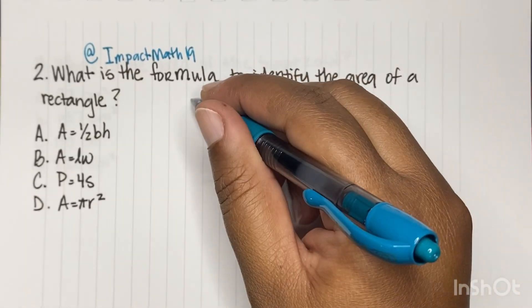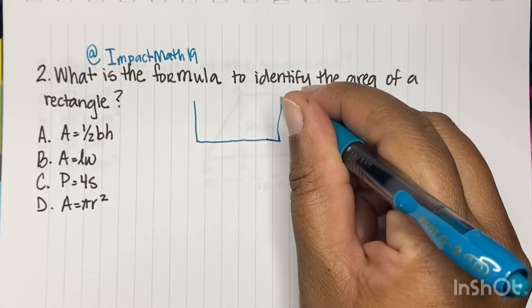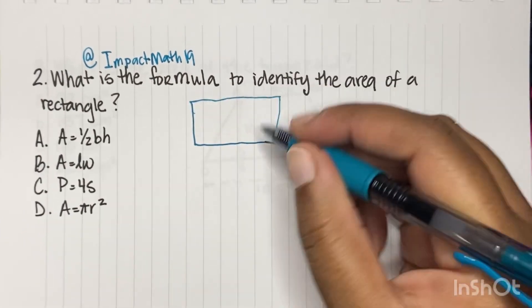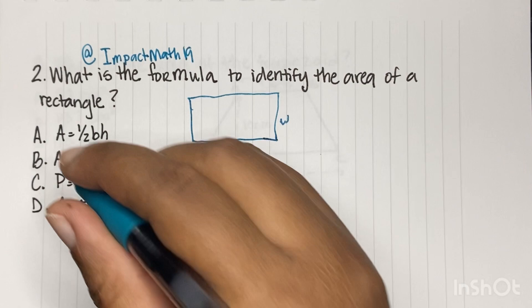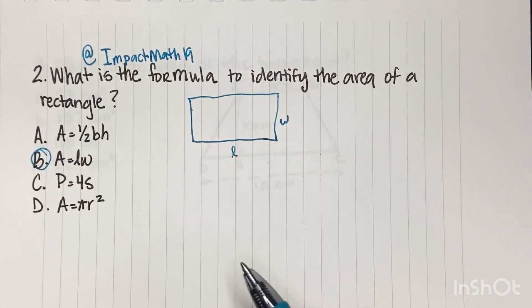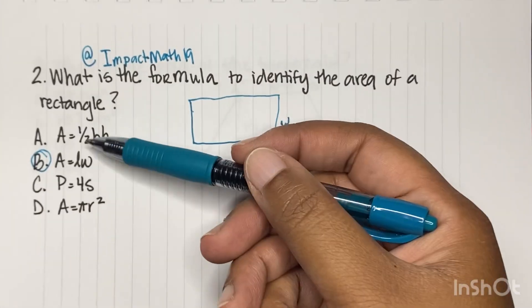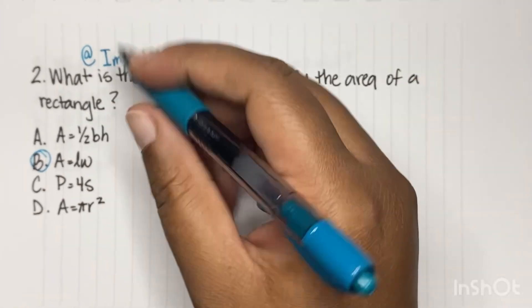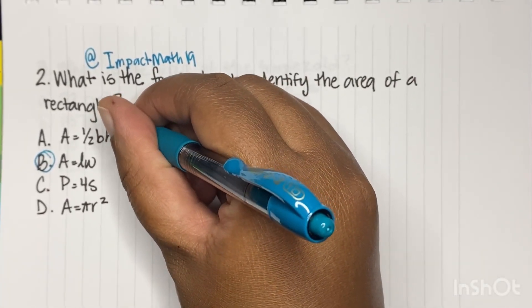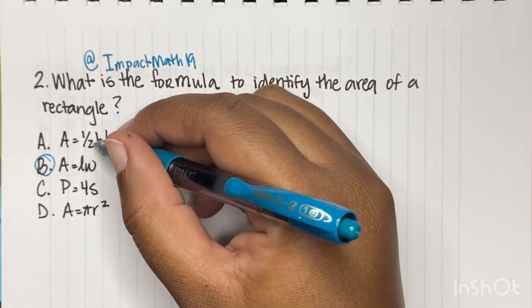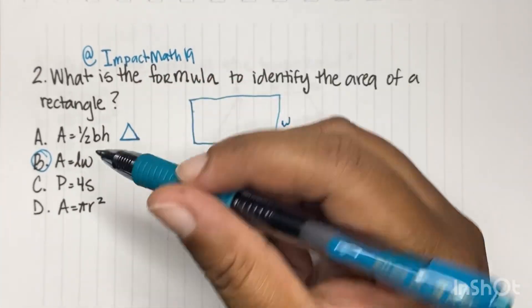So remember, a rectangle, in order for us to find the area, we have to do length times width, okay? So B is our answer. But let's talk about this area. Remember, this would be the area formula for a triangle, okay? Area equals a half times base times height, alright?